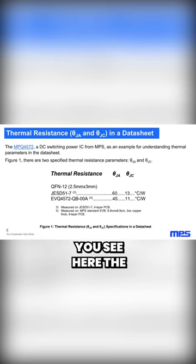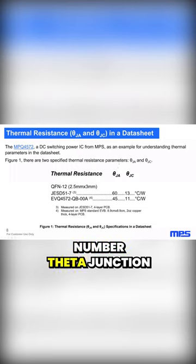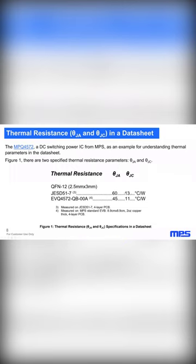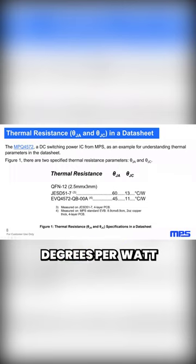You see here the number: theta junction to ambient, 60 degrees per watt.